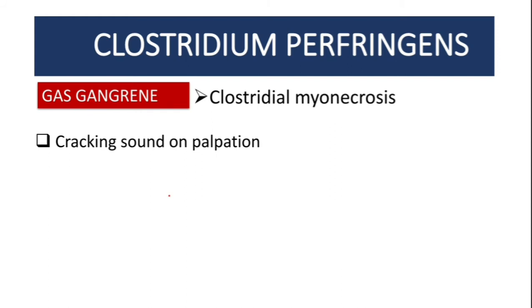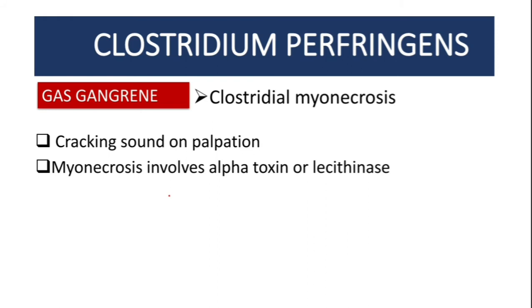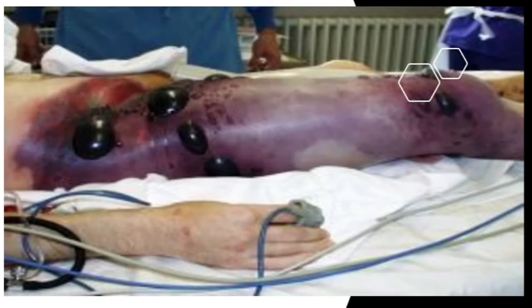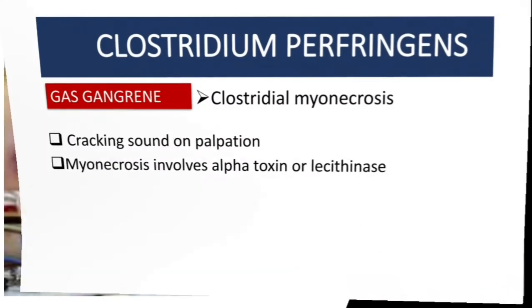In some cases, this myonecrosis can be extensive to the extent of needing surgery to remove the necrotic tissues — that procedure is called necrosectomy. Myonecrosis involves the alpha toxin, also known as lecithinase. Let me show you how it looks like.